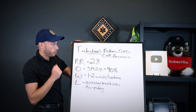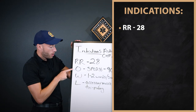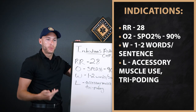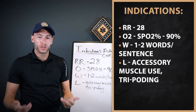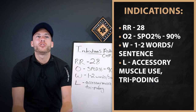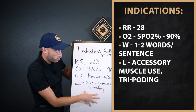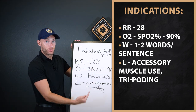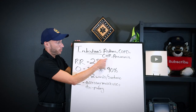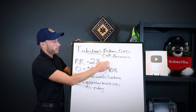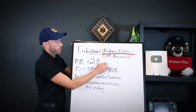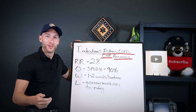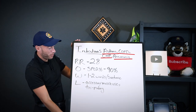Using the RR OWL mnemonic: Respiratory Rate is 28 — that's too high. O is the O2 sat — in this case 90%. Words per sentence — one or two word sentences. And look out for signs of labored breathing, like accessory muscle use, patient positioning — bent over, head up, tripod position. These are all indications for CPAP. Signs and symptoms by condition: asthma and COPD have wheezing; pneumonia has rales or rhonchi; CHF has rales, also known as crackles.